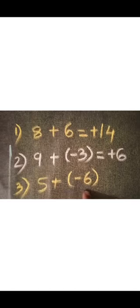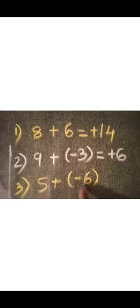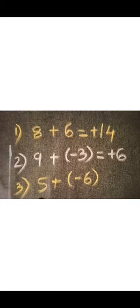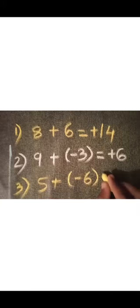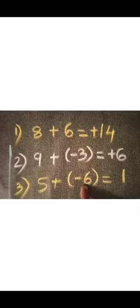Third question: 5 plus minus 6. Here 5 is a positive integer and 6 is a negative integer. Both have different signs. When adding integers with different signs, ignore the sign and subtract the smaller number from the bigger one. So 6 minus 5 equals 1. The bigger number is 6 and its sign is minus, so the answer is minus 1.